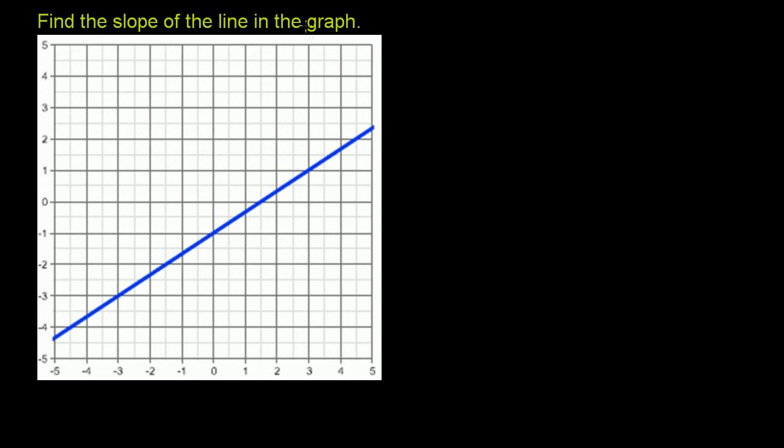Find the slope of the line in the graph. And just as a bit of a review, slope is just telling us how steep a line is. And the best way to view it, slope is equal to change in y over change in x.